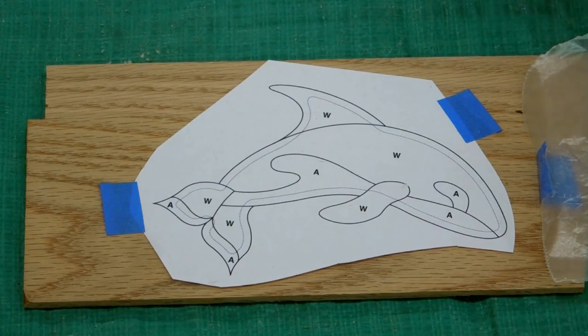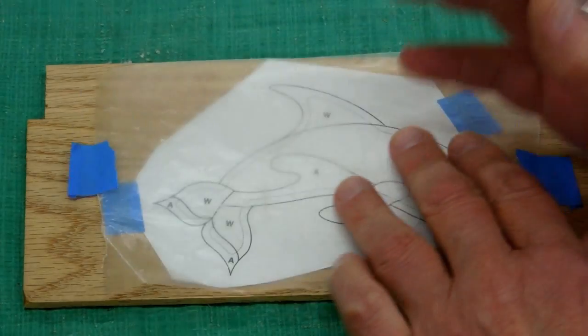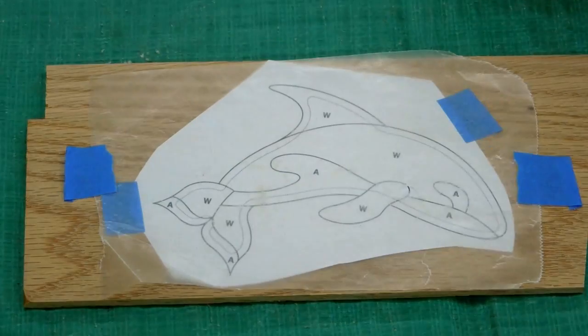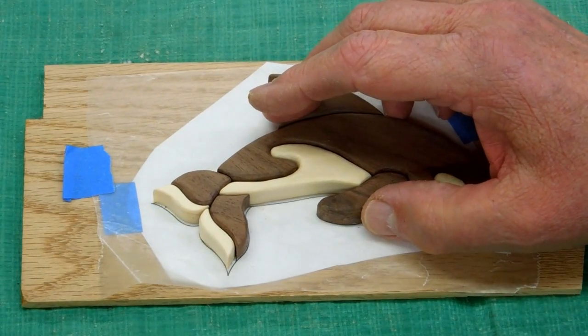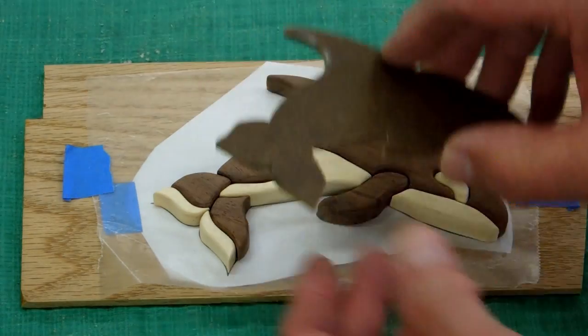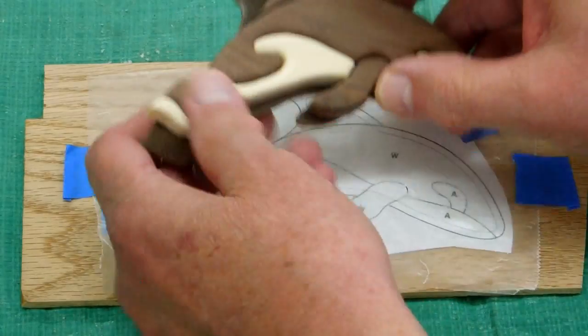You can tape the pattern to anything that's flat. I cover it with a piece of wax paper. Then one by one, glue all the parts together. Then you know when you get ready to put it on the lid for the box that it's going to fit.